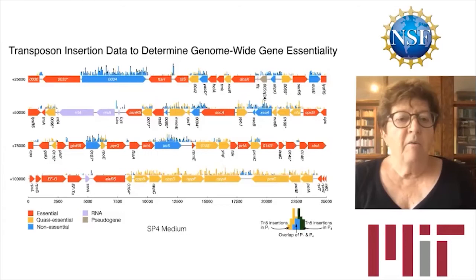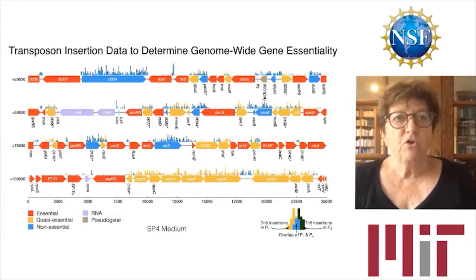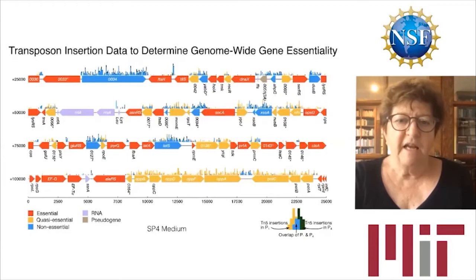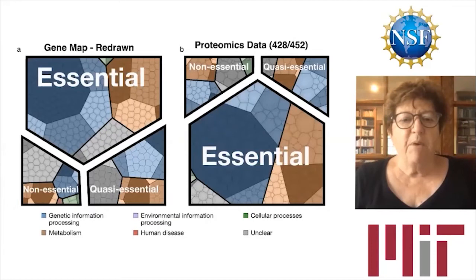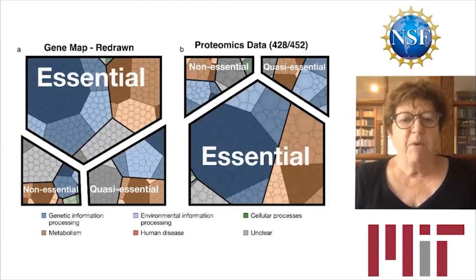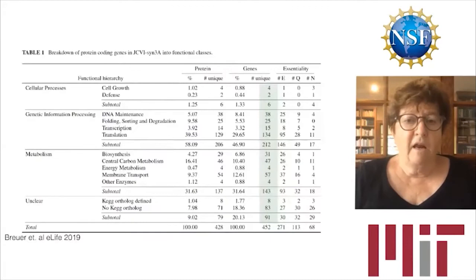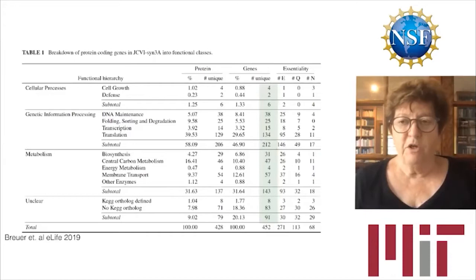Along with this gene map, we also know from our collaborators information on gene essentiality, determined through transposon insertion data. Every gene has been declared either essential, quasi-essential, or non-essential. We can take the gene map along with the proteomics data and redraw it into blocks, concentrating mostly on the essential part. In our 2019 eLife paper, all this information is recorded for all 452 protein-coding genes.